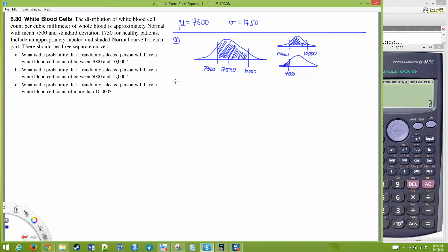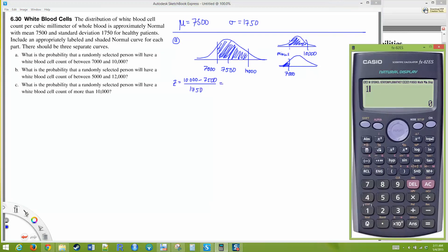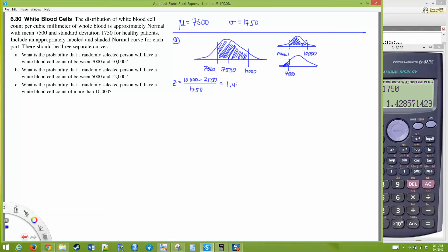Let's work on the area to the left of 10,000. z equals 10,000 minus 7500 divided by 1750. That's 10,000 minus 7500 divided by 1750. I get a z score of 1.428, which rounds to 1.43.